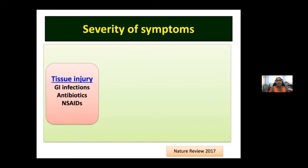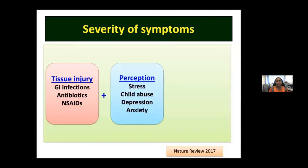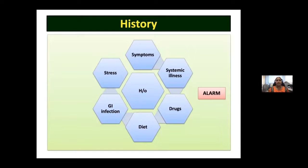Symptom severity is a combination of tissue injury — from infection, antibiotics, or NSAIDs — and the way we perceive symptoms due to stress, childhood abuse, depression, or anxiety. For evaluation: take history of symptoms, severity, nature and spectrum, systemic illnesses, and drug use — especially NSAIDs, aspirin, antibiotics, or any drugs causing GI injury. Understanding dyspepsia as 'bad digestion' is key — patients cannot digest properly.